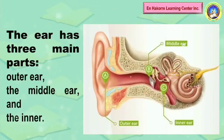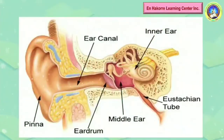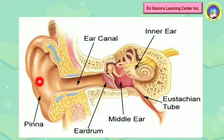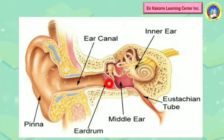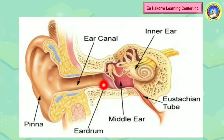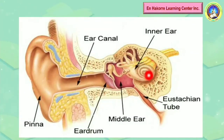Let's go further to know the specific parts inside each section. The outer ear contains the pinna. The middle ear has the ear canal and the eardrum. And in the inner ear, you have the cochlea.